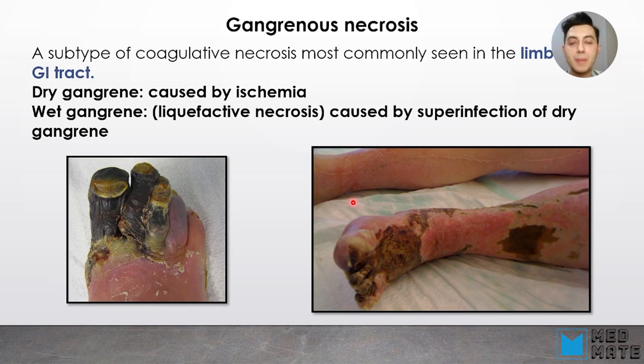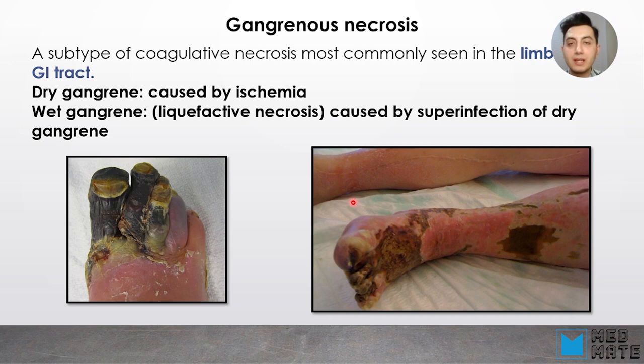Another type of necrosis is gangrenous necrosis. Gangrenous necrosis is basically a subtype of coagulative necrosis and is most commonly seen in limbs and the GI tract — for example, appendicitis — in tissues exposed to oxygen. We have two types: dry gangrene, which is caused by ischemia, and wet gangrene, which is a subtype of liquefactive necrosis caused by superinfection of dry gangrene. So dry gangrene, after superinfection, progresses to liquefactive necrosis.